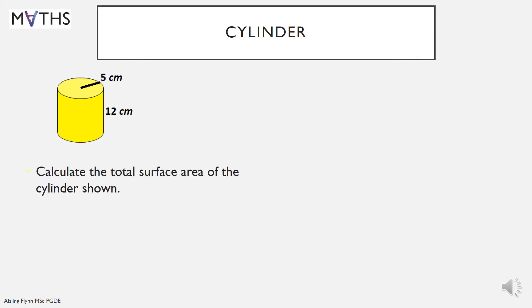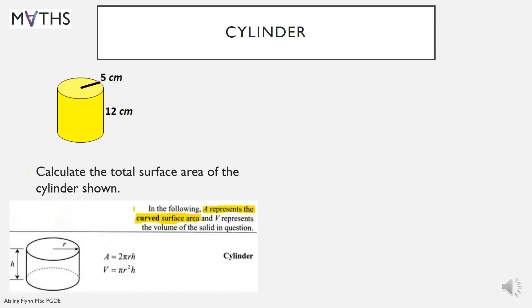So here's an example. Calculate the total surface area of the cylinder shown. In your formula in the tables book, this is what you'll find. But please note, it gives a note, in the following, A represents the curved surface area. So the area formula only gives the result for the curved surface area. So not the top or the bottom of the tin of beans, just the label part, 2 pi r h. So if you're asked for the total, you'll have to add in the top and the bottom also.